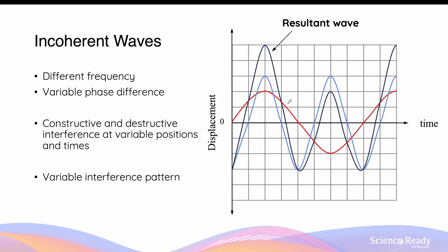This resultant interference pattern is described as variable because the amplitude of the wave is not constant. The amplitude of the resultant wave is greater when the two initial waves underwent constructive interference, and the amplitude is much lower when they underwent destructive interference.